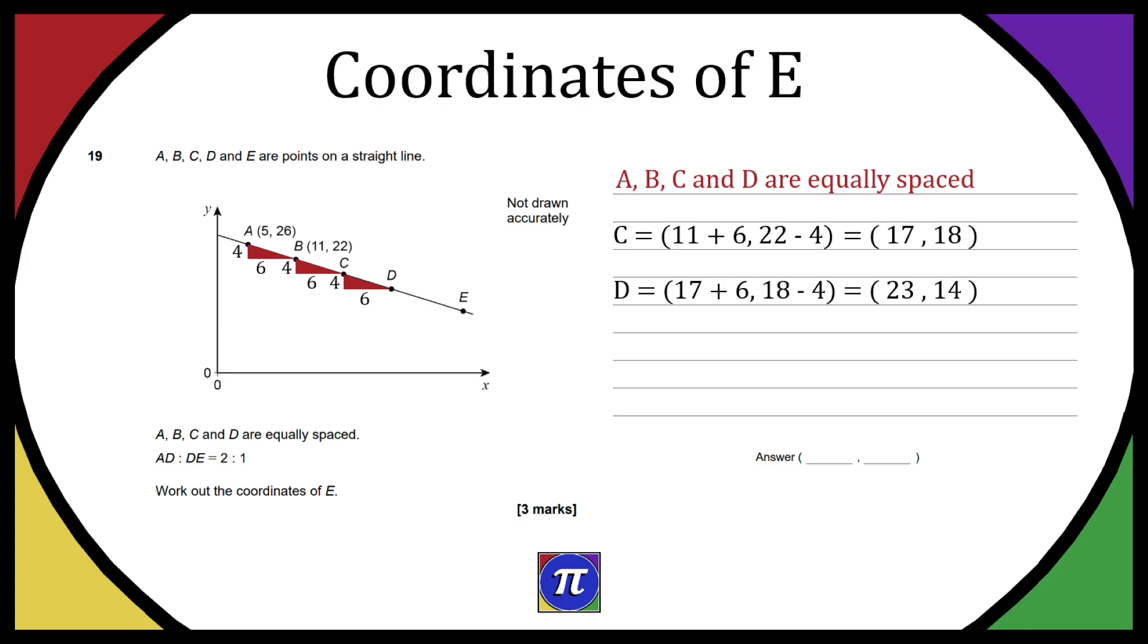So if we wanted to travel from point A to point D, we need to work out the difference between point A and point D. Point A is (5, 26) and point D is (23, 14), so we have to add 18 to the x-value and subtract 12 from the y-value. So we know the distance is (18, -12), and to travel D to E it's going to be half of that, so we divide this by 2.